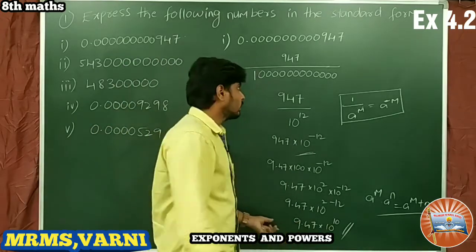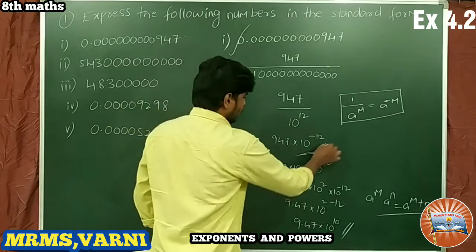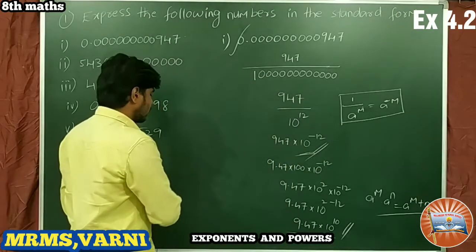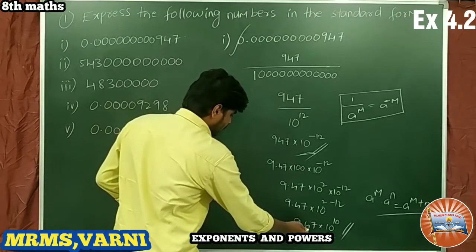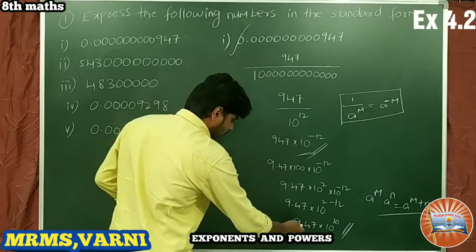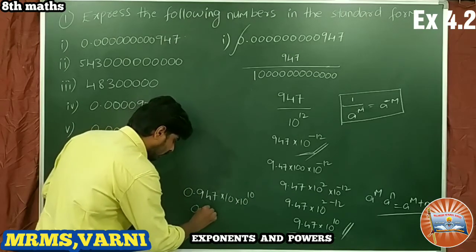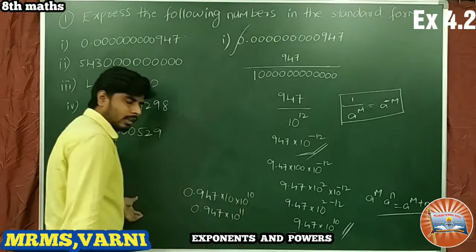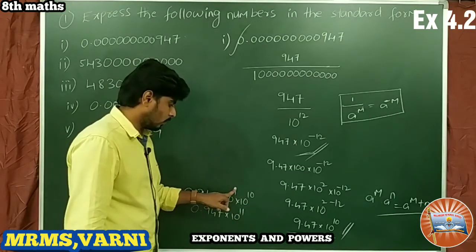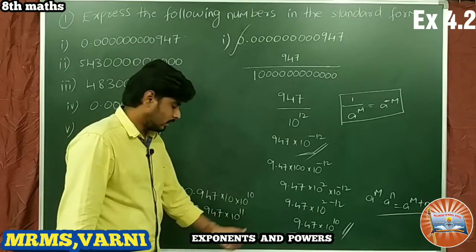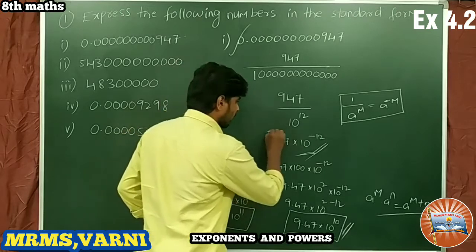We can also write it another way: 0.947 × 10^(−11), by moving the decimal point one more place and multiplying by an extra factor of 10, giving 10^(10+1) = 10^11 in the denominator, so 10^(−11). All these are correct answers depending on our requirement.